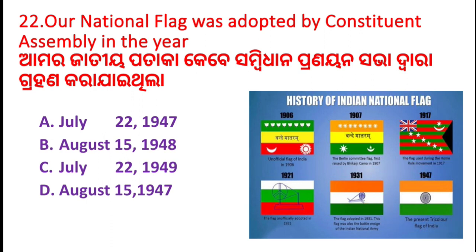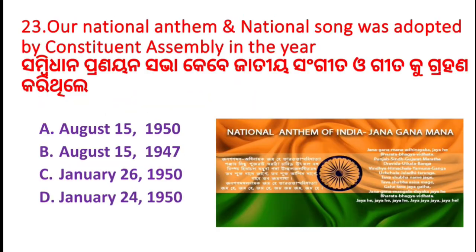Question number 23: Our national anthem and national song were adopted by the Constituent Assembly. In which year? Option A: August 15, 1950. Option B: August 15, 1947. Option C: January 26, 1950. Option D: January 24, 1950.